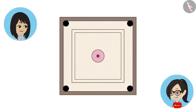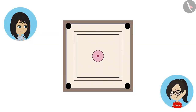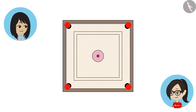Look at the carom board. The carom board is in the shape of a square but it has four circle-shaped holes, and the center also has a circular design.